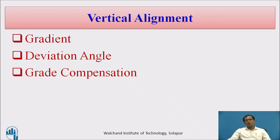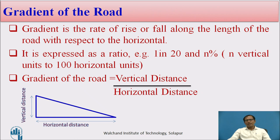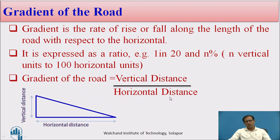Let us discuss some of the important parameters of the vertical alignment: gradient, deviation angle, and grade compensation. Gradient is the rate of rise or fall along the length of the road with respect to the horizontal — how much rise you are trying to achieve. It is a ratio of vertical distance to horizontal distance, expressed in terms of 1 in 20, or 1 in n, or n percentage. n percentage means n vertical units to 100 horizontal units.